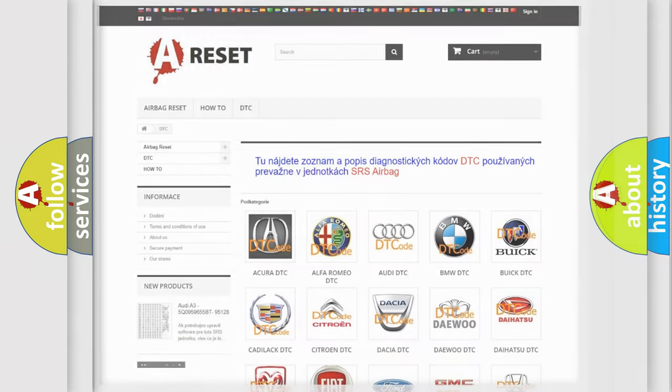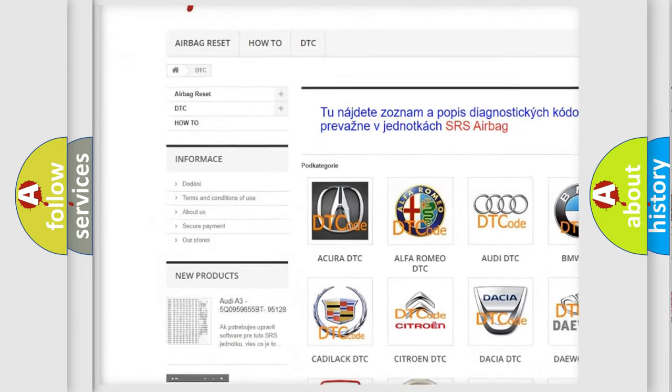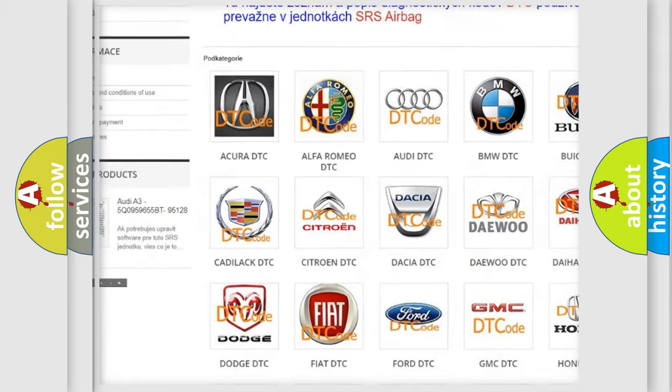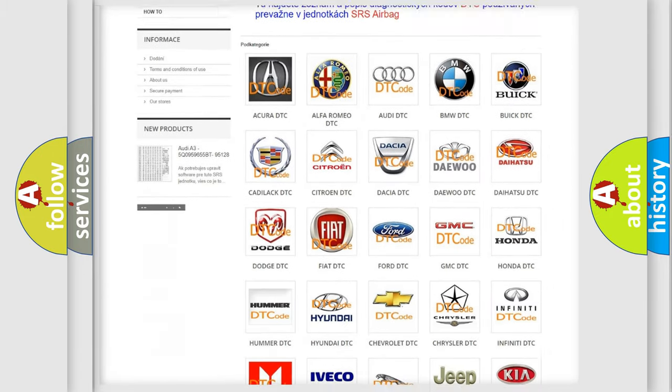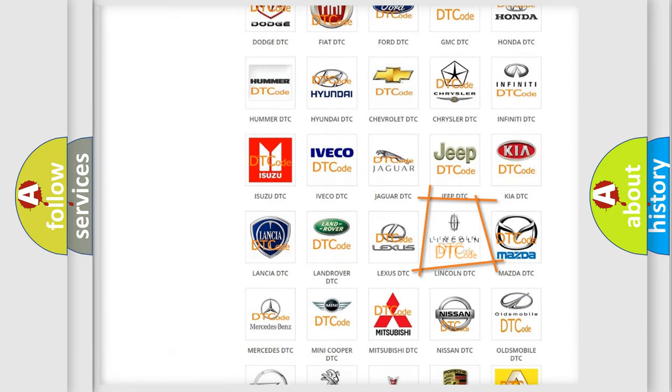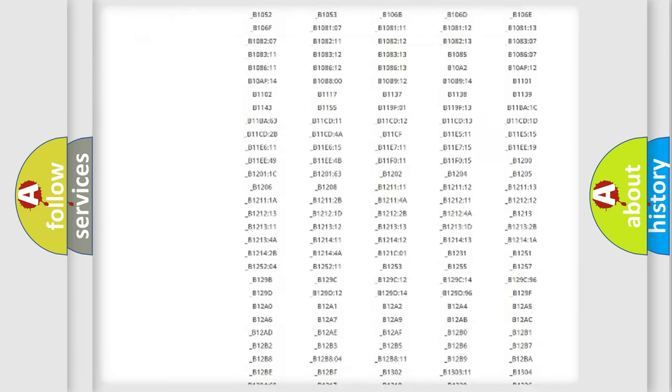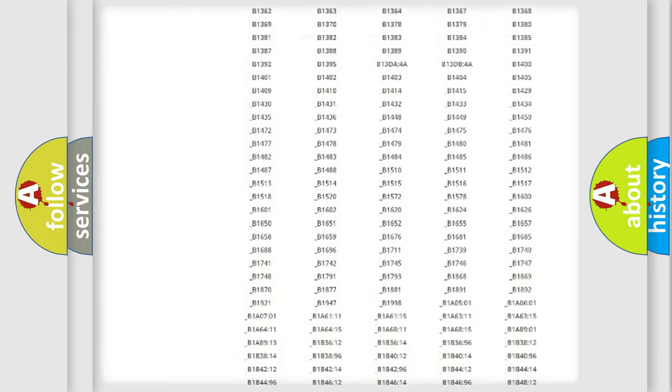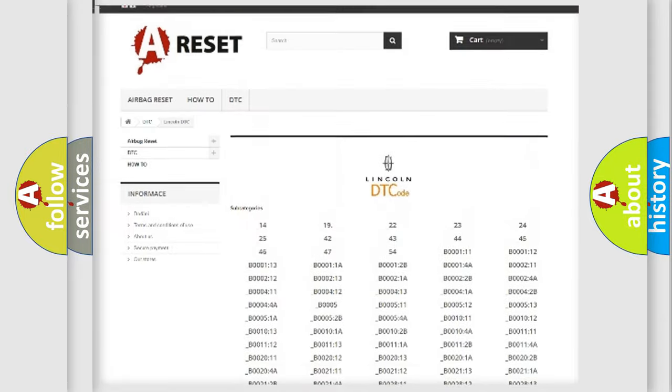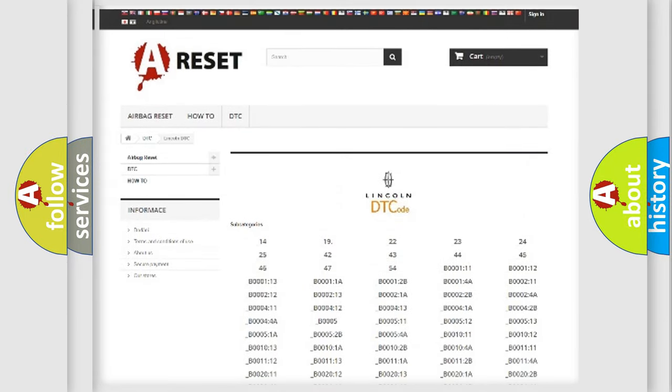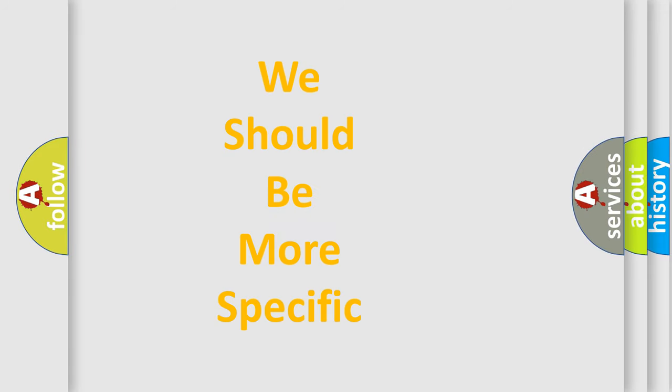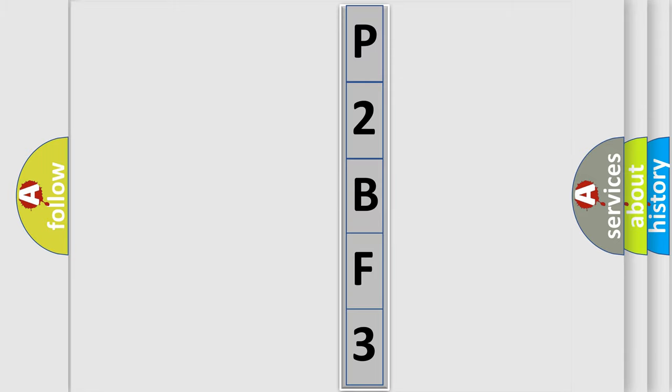Our website airbagreset.sk produces useful videos for you. You do not have to go through the OBD2 protocol anymore to know how to troubleshoot any car breakdown. You will find all the diagnostic codes that can be diagnosed in Lincoln vehicles, and also many other useful things. The following demonstration will help you look into the world of software for car control units.